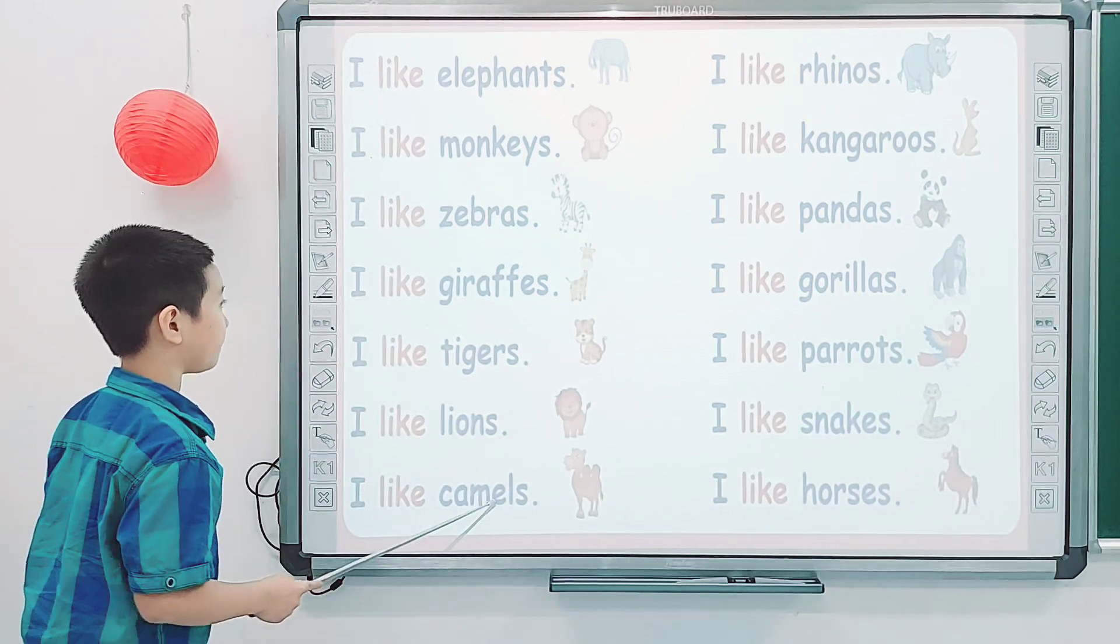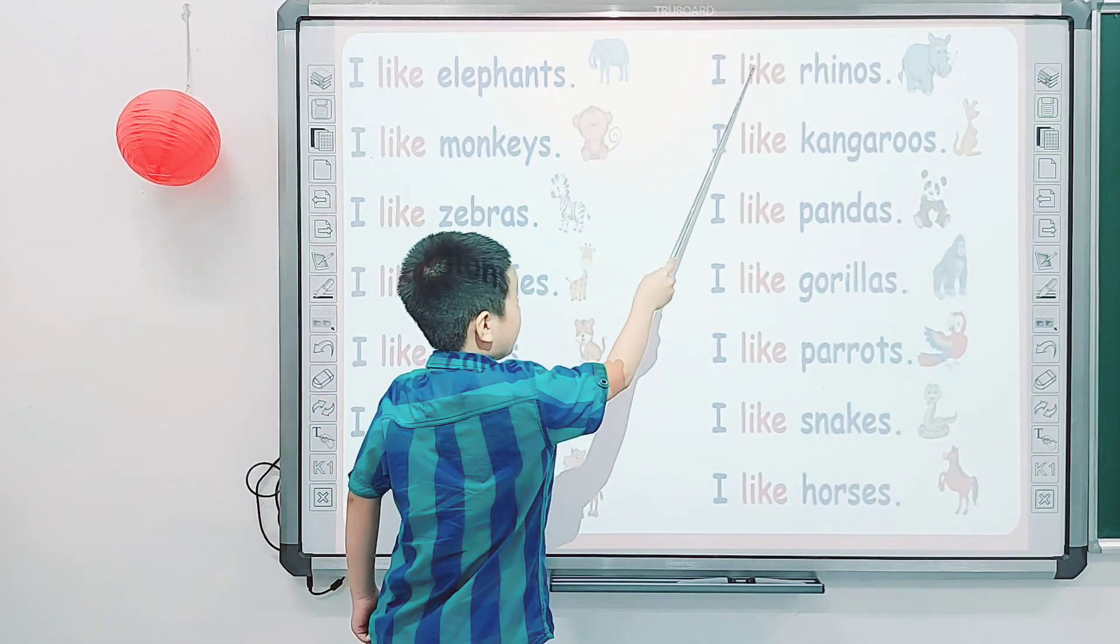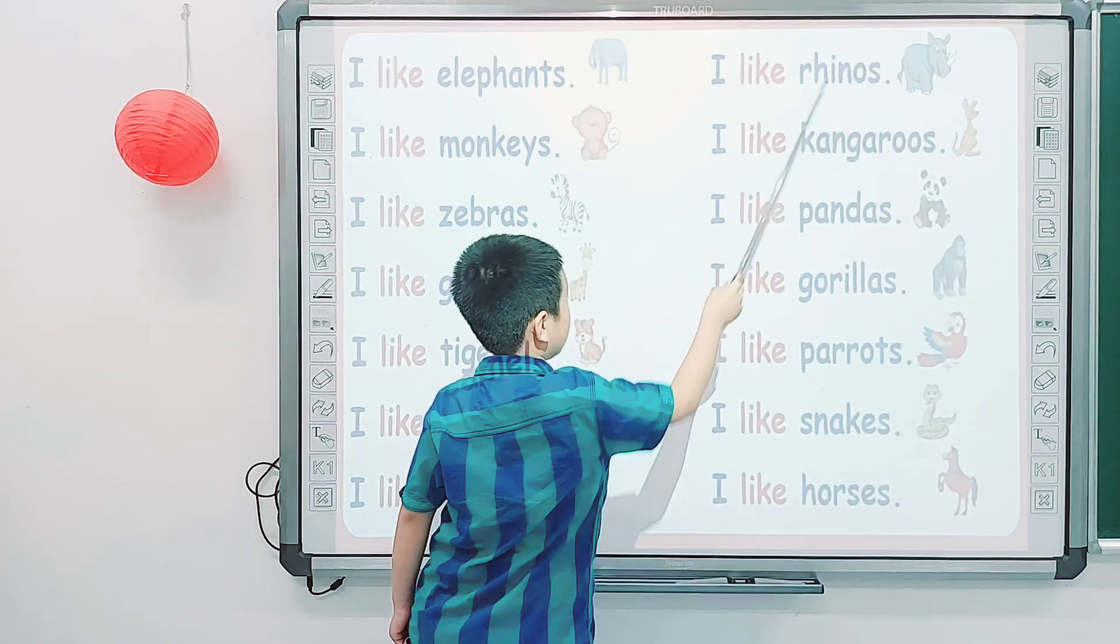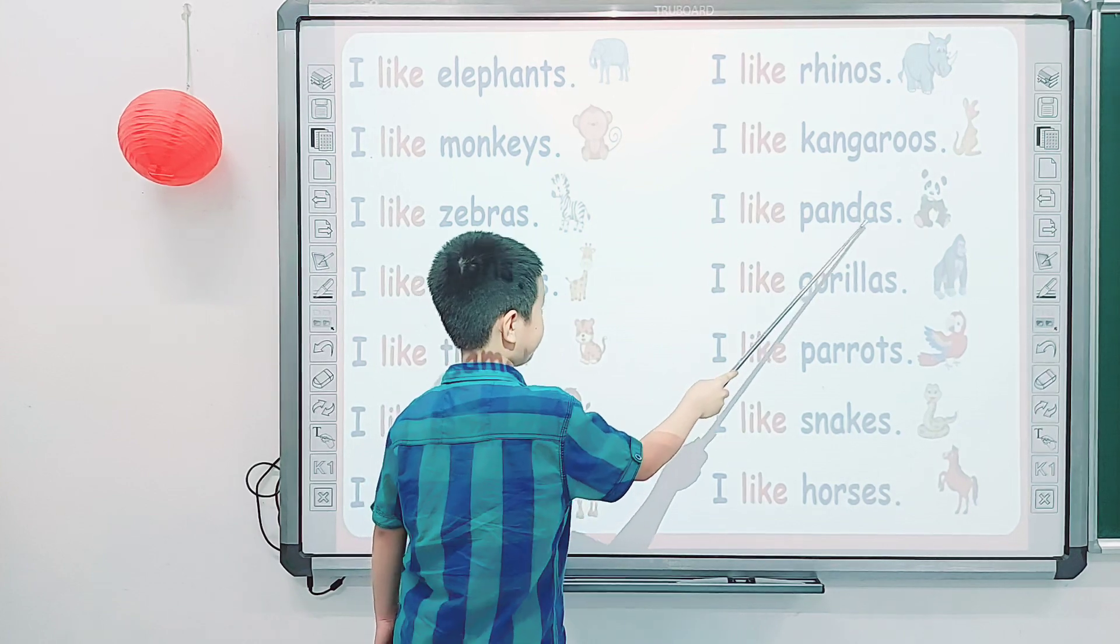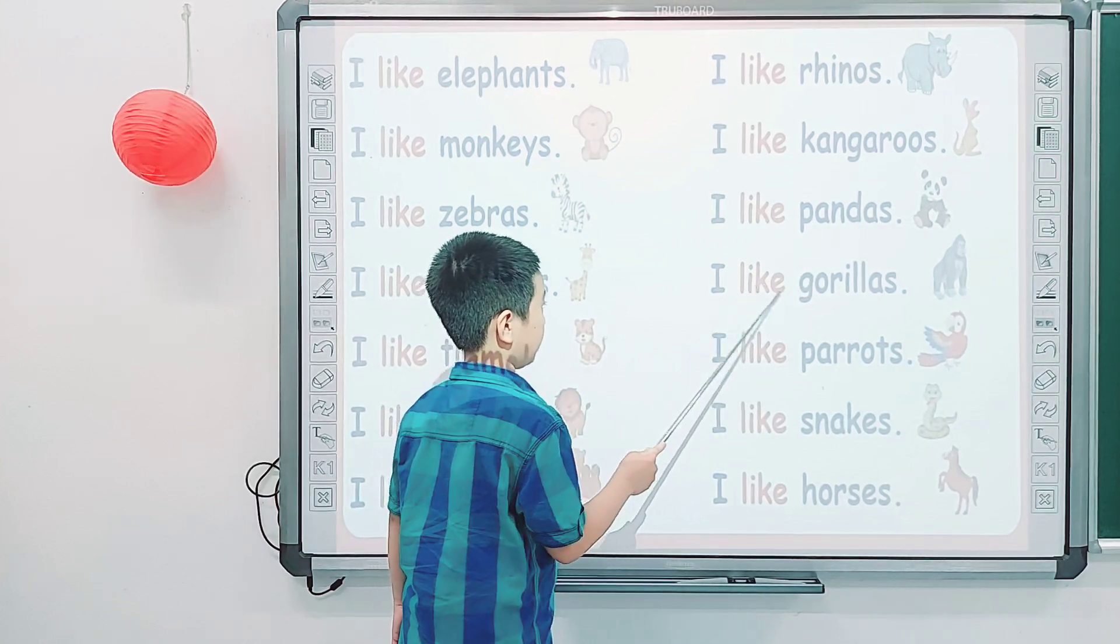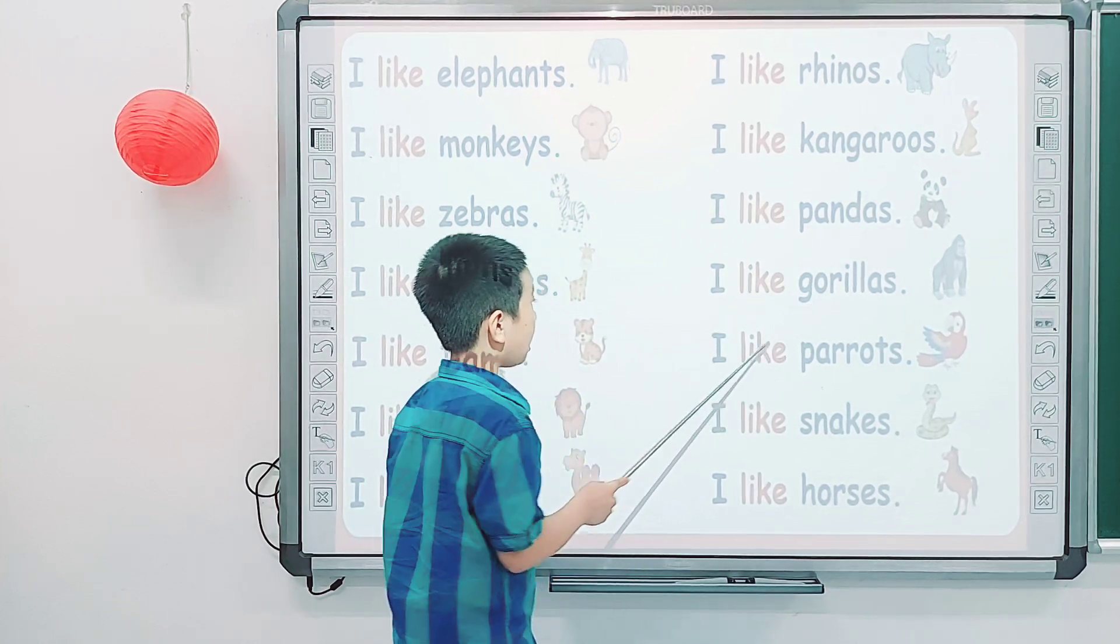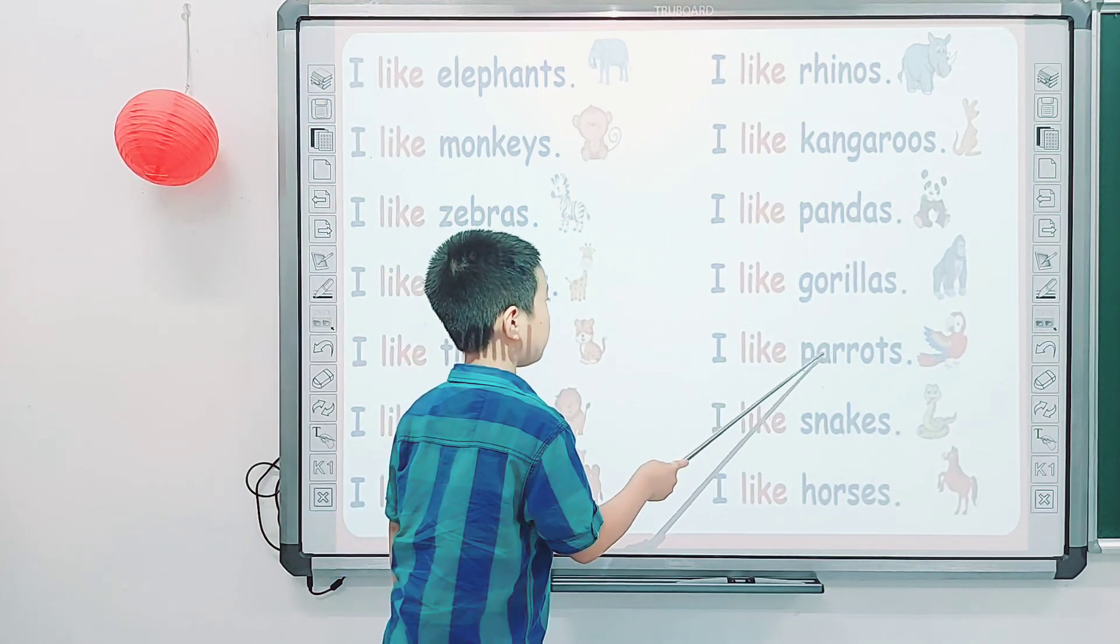I like camels. I like gorillas. I like kangaroos. I like pandas. I like parrots. I like snakes. I like horses. I like bears.